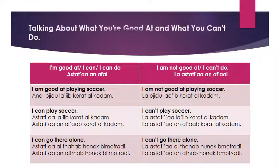Here I'm refreshing your background knowledge about the objective we tackled last week: talking about what you're good at and what you can do. In order to talk about your hobby, you have to talk in two ways — either you say 'I am good at' or 'I can.' For example, 'I am good at playing soccer.' After 'I am good at,' there is always a noun form of a verb.